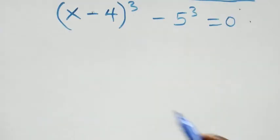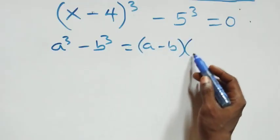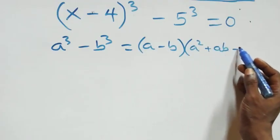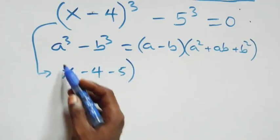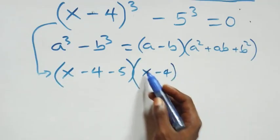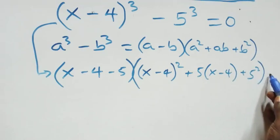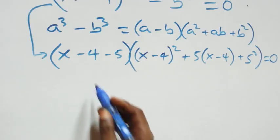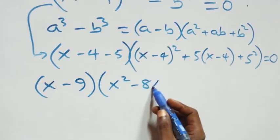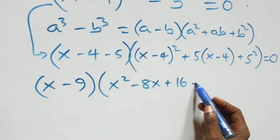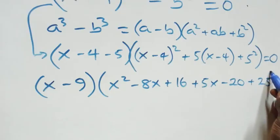Solving for the second case: a³ minus b³ equals (a minus b) into brackets times (a squared plus ab plus b squared). What we have becomes (x minus 4 minus 5) into brackets, times (x minus 4) squared plus 5 times (x minus 4) plus 5 squared, close brackets, equals to 0. That is, (x minus 9) into brackets times the expansion x squared minus 8x plus 16 plus 5x minus 20 plus 25, equals to 0.